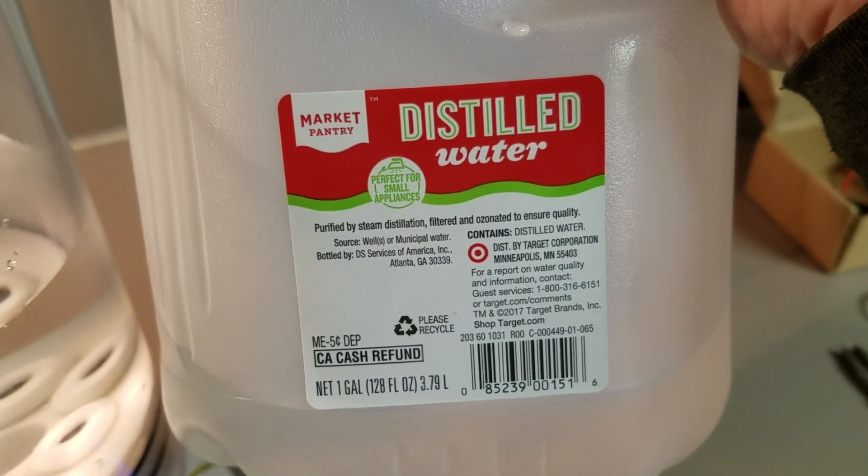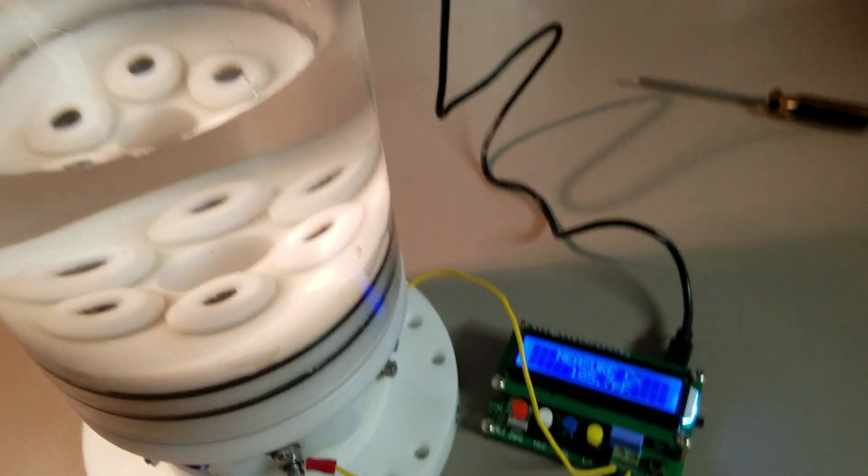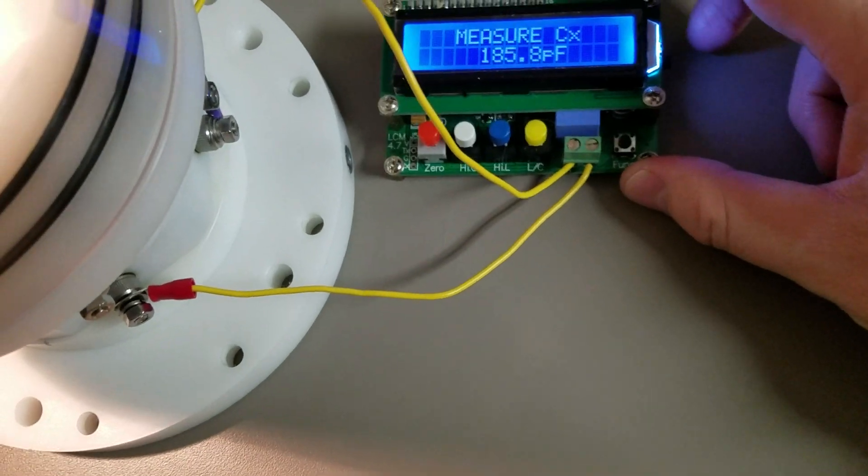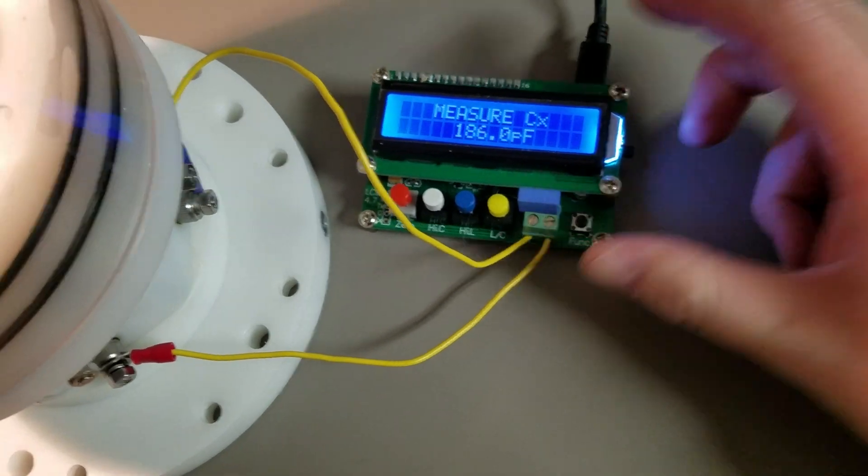First off, when you measure a cell, use distilled water. That will give you a nice stable reading. And these meters work really well. You can get them online for probably $10.